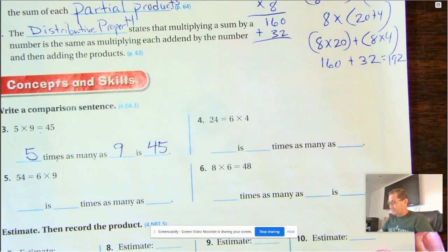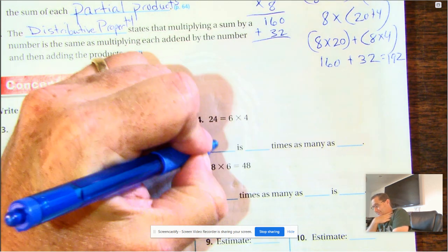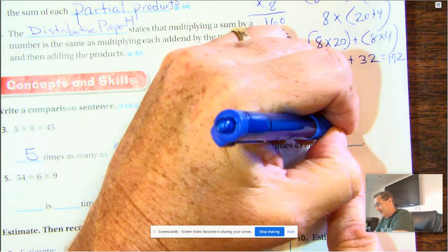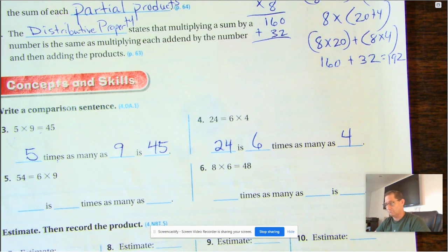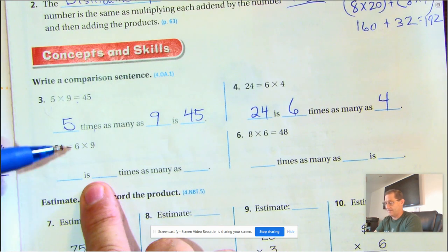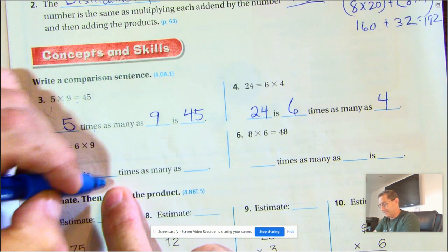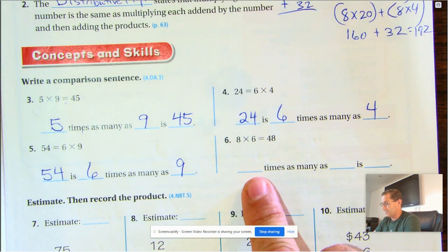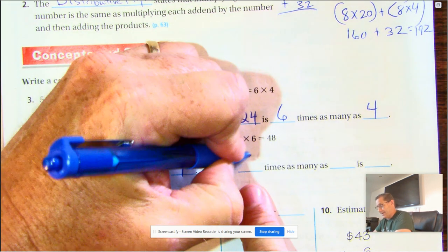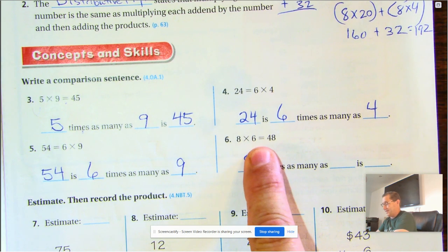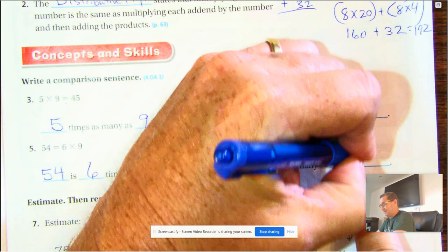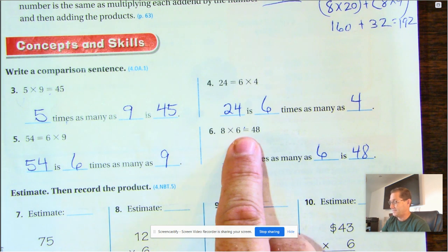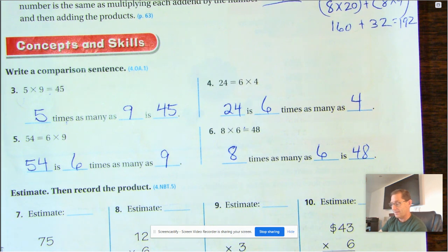Number four, this time it says 24 is 6 times as many as 4. Number five, again 54 is 6 times as many as 9. This time we're going left to right again. 8 times as many as 6 is 48.